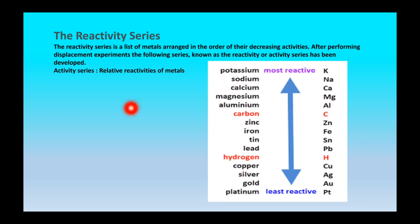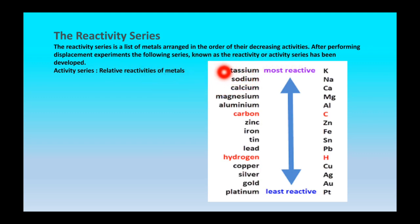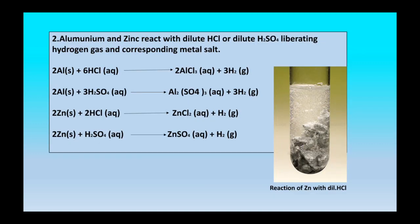Next is the reactivity series. In the reactivity series, metals are arranged in order of decreasing activity, determined after performing displacement experiments. Elements that are higher in the reactivity series are the most reactive, while elements lower in the series are the least reactive.